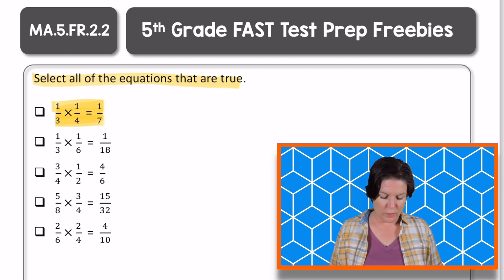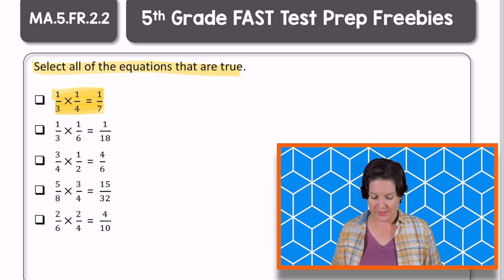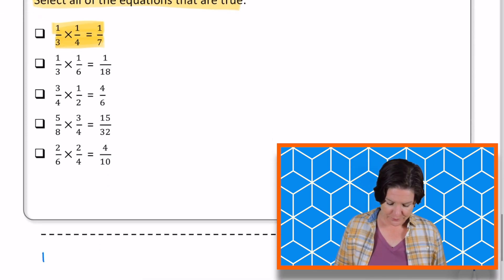All right, so this first one right here says one third of one fourth. One third times one fourth, is that one seventh? Well, I know that one third times one fourth, if I'm multiplying across, one times one would be one in my numerator, and three times four would be 12 in the denominator.